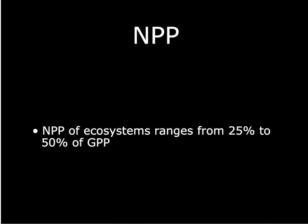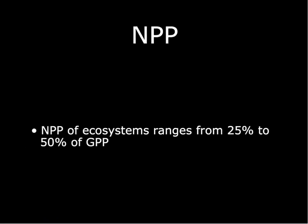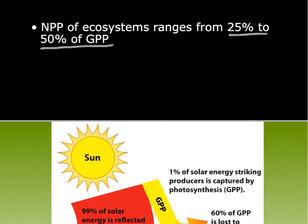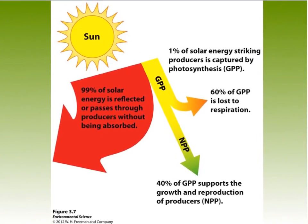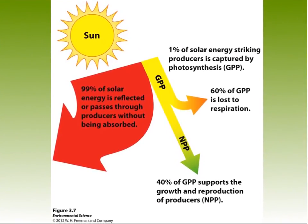NPP is net primary productivity, and in most ecosystems this range is between 25% and 50% of GPP. This is simply because of inefficiencies and the second law of thermodynamics.